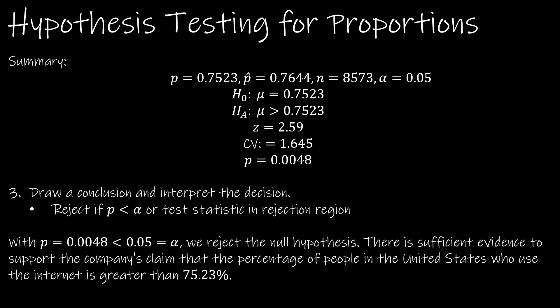Our conclusion is with p less than alpha, we reject the null hypothesis. There's sufficient evidence to support the alternative hypothesis, which is that the percentage of people in the US who use the internet is greater than 75.23%.